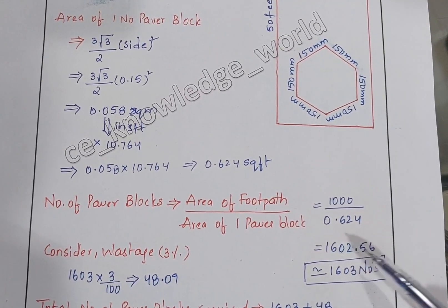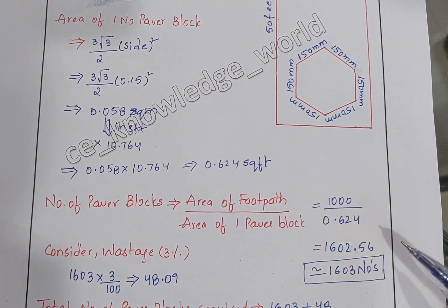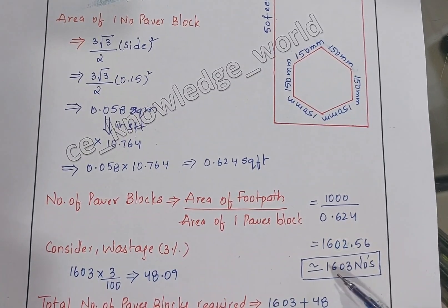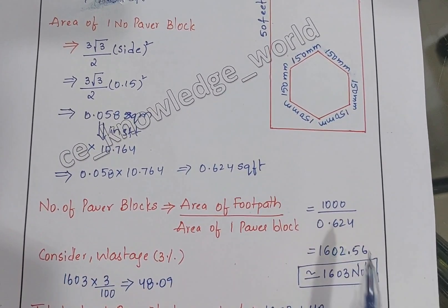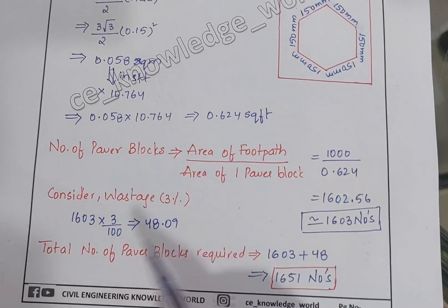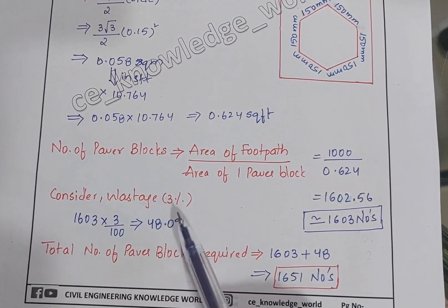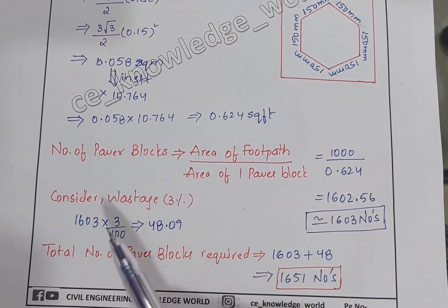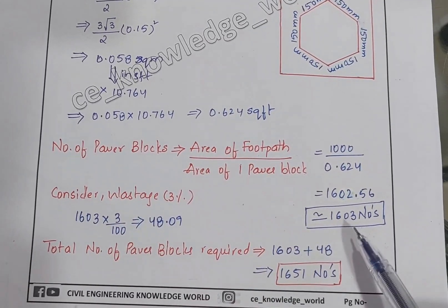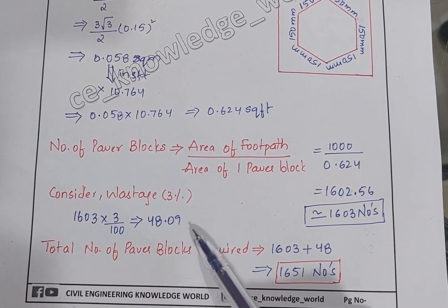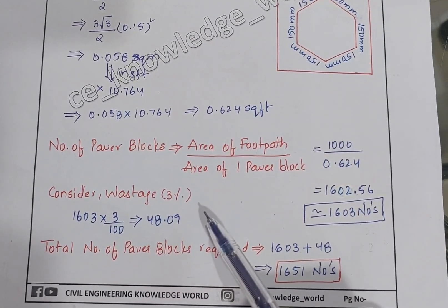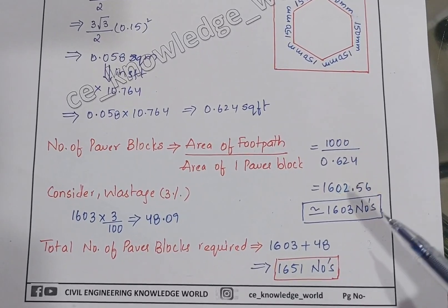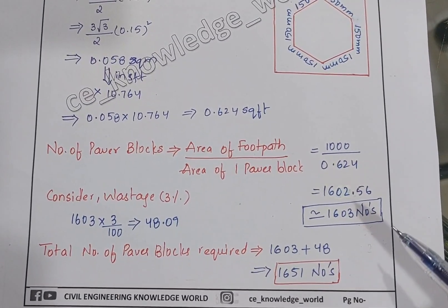After doing this calculation we get 1602.56, which can be written as 1603 numbers. Now we are considering the wastage percentage as 3 percent. So 1603 into 3 percent gives us 48.01 — this is the number of extra tiles required for wastage.